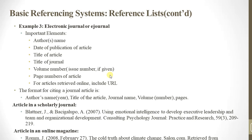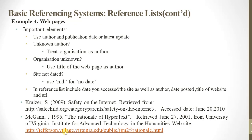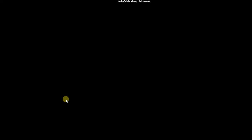For electronic journals, the important elements are: author's name and date of publication. This format applies to scholarly journal articles, articles in online magazines, and web pages. Web pages have their own important elements as well.